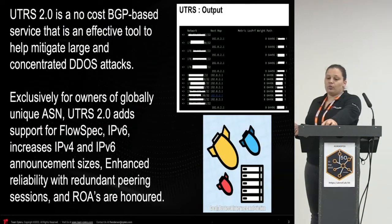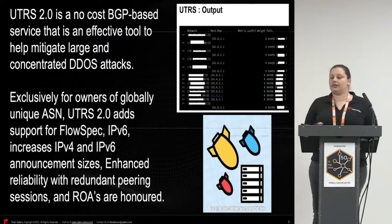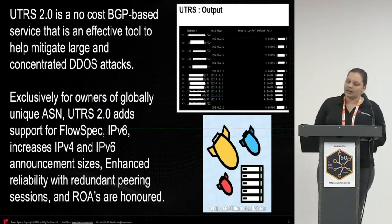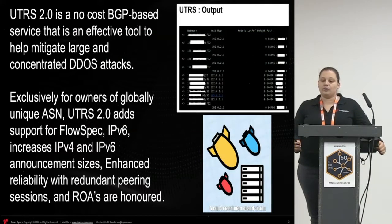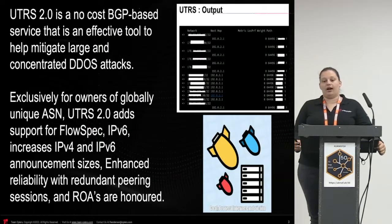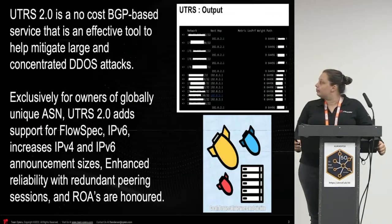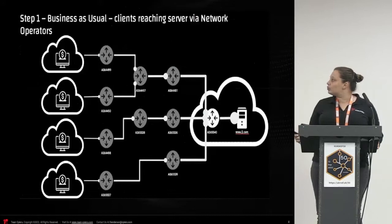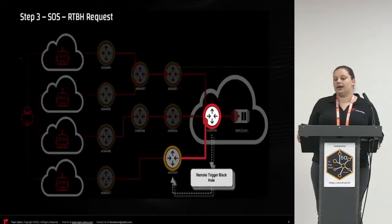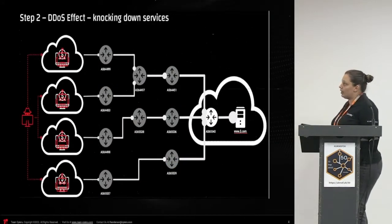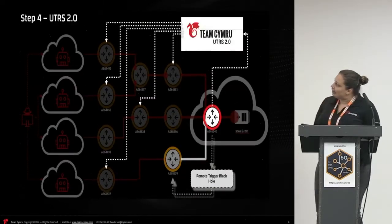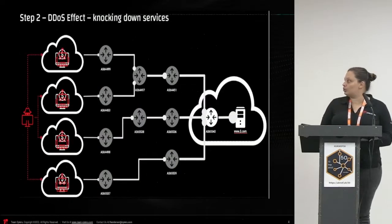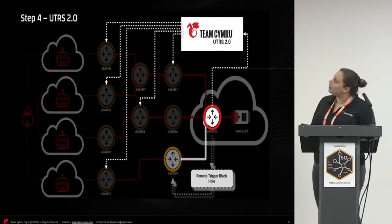The next question: why use Atters? Because it offers support for geographically diverse networks, better peering, route efficiency, and PKI validation based on regional internet registry information. It also supports flow specs and increased announcement size for IPv4 and IPv6. And here I've made a little GIF to show exactly how it works.